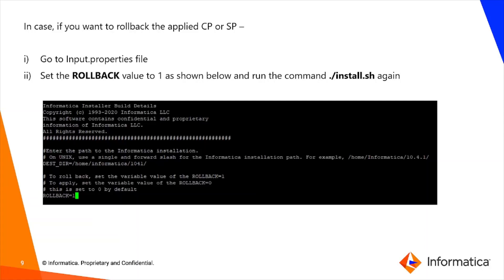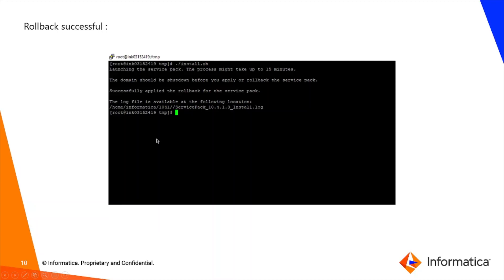If you need to revert back to the EDC version before applying the CP or SP, open the input.properties file and set the rollback parameter to 1. Then run ./install.sh again. Similar to the installation process, a prompt appears and you wait until the EDC version is reverted. Once done, you are back to the previous version. This concludes the presentation; a demo will follow.